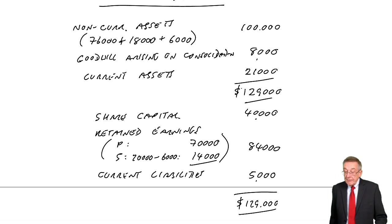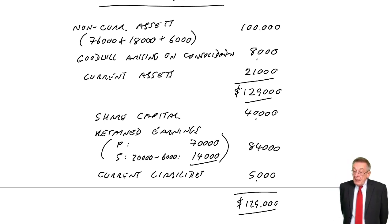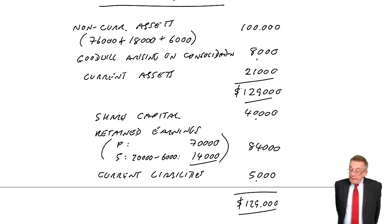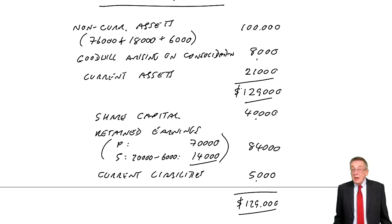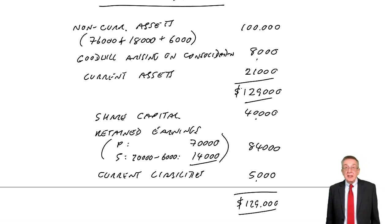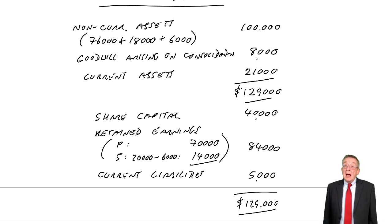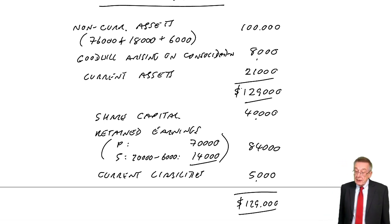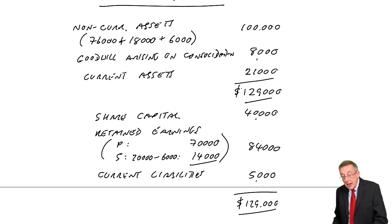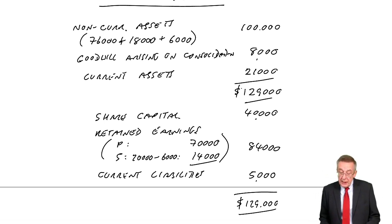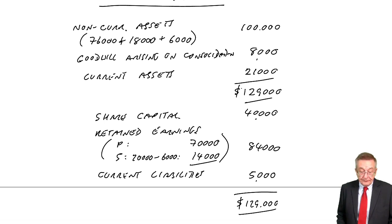So there we are. We know how to calculate goodwill and deal with this fair value adjustment, and we know how to calculate the retained earnings — always all of the parent's, plus the post-acquisition earnings of the subsidiary.